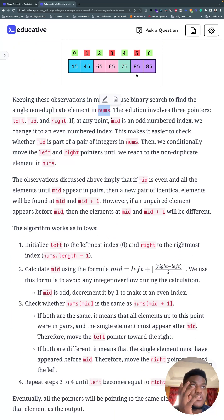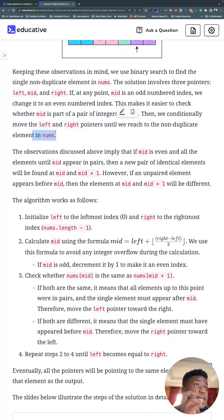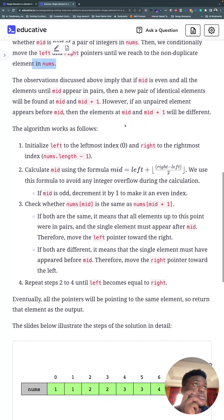Three pointers as usual in binary search: left, mid, right. If at any point mid is an odd numbered index, we change it to an even numbered index, and it makes it easier to check whether mid is part of a pair of integers in numbers. Then we conditionally move the left and right pointers until we reach the non-duplicate element in numbers.